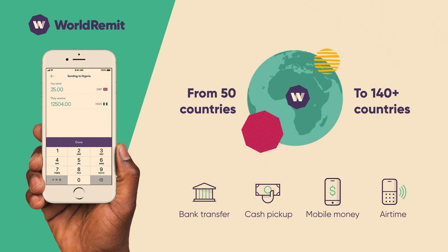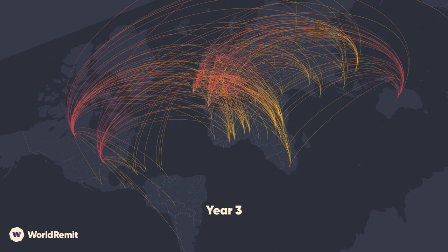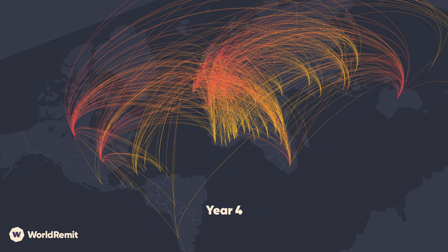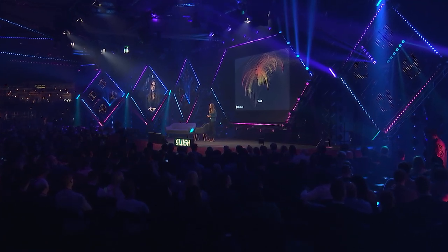Let me show you our story going to 140 countries visually. We started off launching in the UK and sending money to just a few received countries. In the next year, we began to radically expand, opening up Canada as a send country and a lot of African received countries. Then into our third year, we got Australia coming on, and we really opened up Africa and Asia. In the fourth year, it's beginning to look like a truly global product, and in year five, we got to 140 countries.